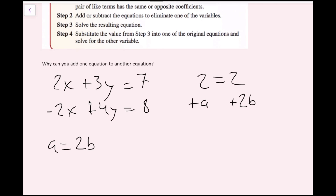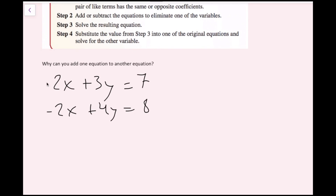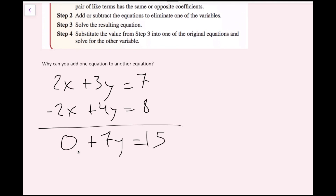Where does that bring us when we're adding two equations together? If I want to add 2x plus 3y equals 7 and negative 2x plus 4y equals 8, I can do that because negative 2x plus 4y is the exact same thing as 8 — they have the same value, hence the equal sign. So if I add negative 2x plus 4y on the left and 8 on the right, I'm adding the exact same value on both sides. Adding the x's, those cancel, giving 7y equals 15.